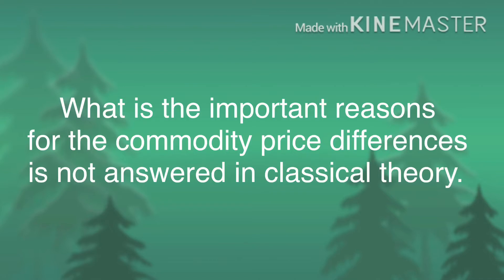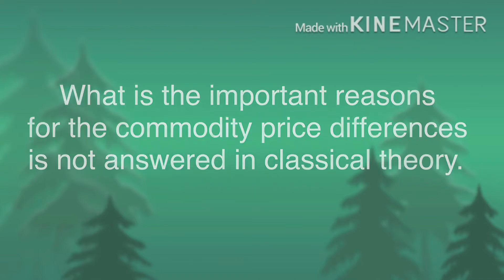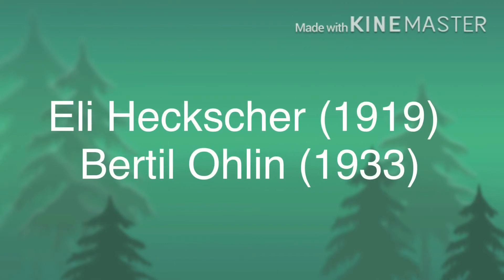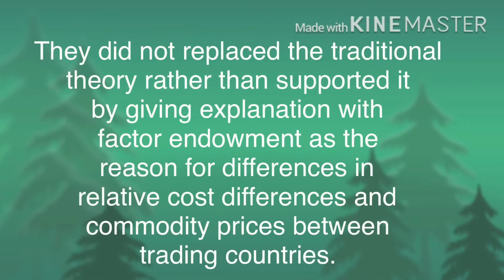But what is the fundamental cause for the commodity price differences? That is not answered in the classical trade theory. The theory for analyzing the pattern of international trade was developed by Swedish economist Heckscher in 1919, and his student Ohlin in 1933 made an attempt to deal with these important questions. This theory did not replace the traditional comparative cost theory; rather it supported it by providing an explanation for relative commodity price differences and comparative advantages.